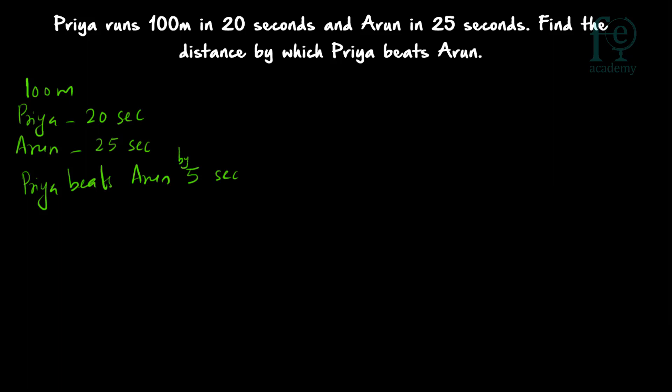So 5 seconds is the time by which Priya is winning the race. If you are able to find out the distance travelled by Arun in those 5 seconds, you can find out the distance by which Priya is beating Arun. So how much distance does Arun cover in the last 5 seconds? That will give us the answer.